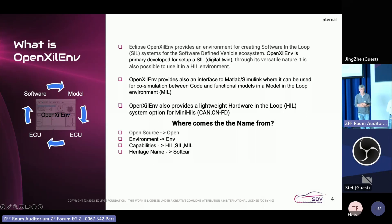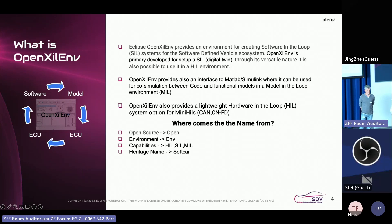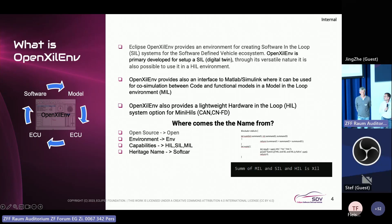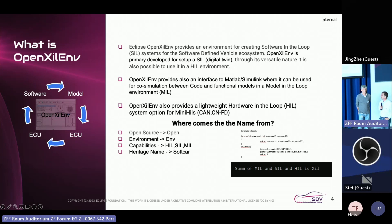The capabilities should somehow be in the name — it can do HIL, SIL, and MIL. The heritage name was SoftCar, which we wanted to replace to avoid confusion with other projects like SDV. We put all these inputs into ChatGPT and Copilot — the answer was 42, which was not a good name. So the sum of MIL, SIL, and HIL is XIL, and that's why the name became OpenXIL.